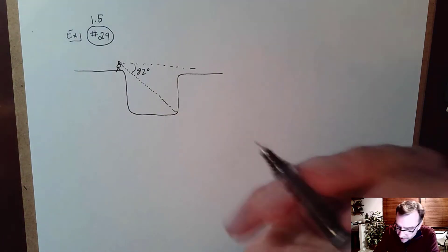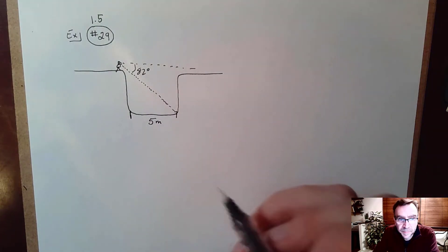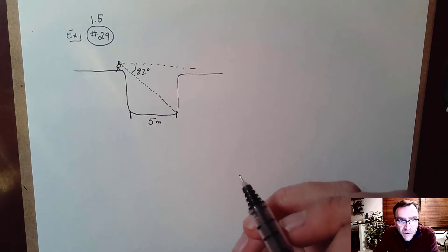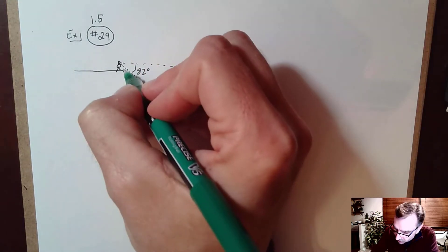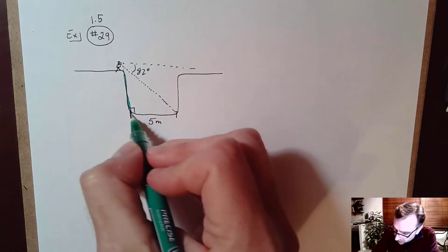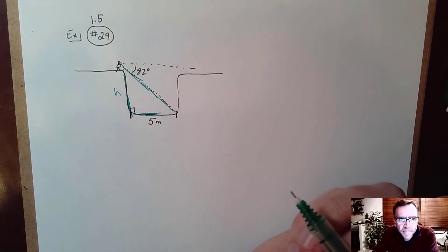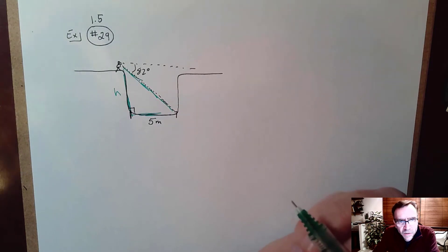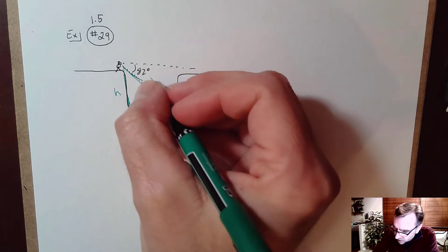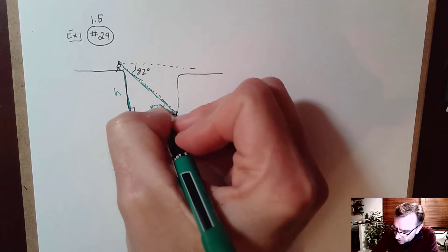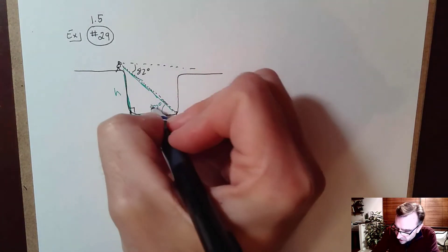The hole measures 5 meters in width. Assuming a right angle at the base, we can apply trigonometry to this right triangle, where this is the height H. We have two parallel lines here, so these are alternate interior angles — meaning this angle is also 82 degrees. I need to find H, which is the side opposite, and I'm given the side adjacent (5 meters).